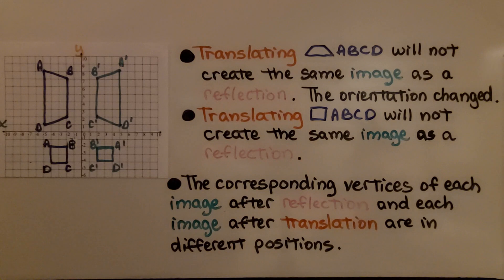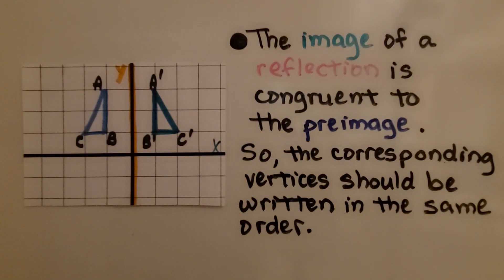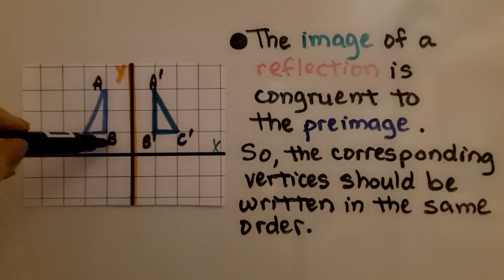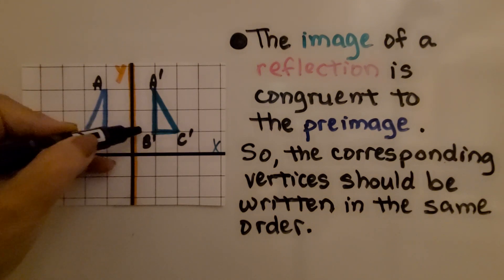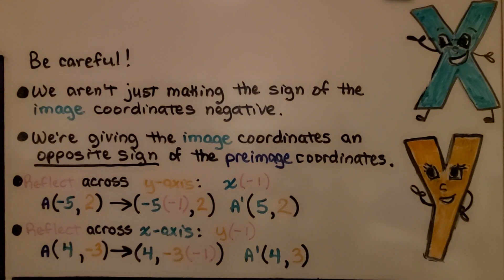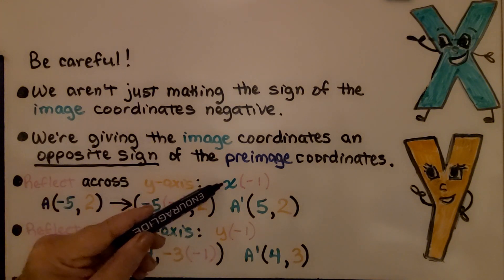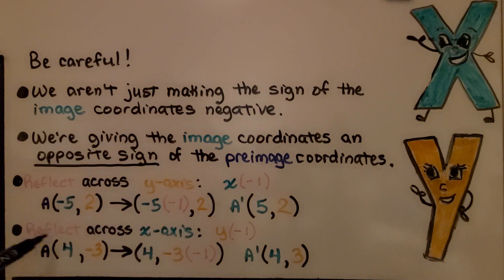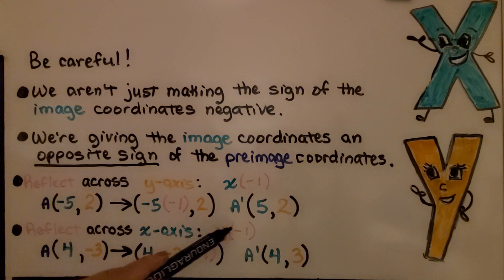The corresponding vertices of each image after reflection and each image after translation are in different positions. The image of a reflection is congruent to the pre-image, so the corresponding vertices should be written in the same order: A, B, C maps to A prime, B prime, C prime. Be careful — we aren't just making the sign of the image coordinates negative; we're giving the image coordinates an opposite sign of the pre-image coordinates. If reflecting across the y-axis, multiply x-values by negative 1; if reflecting across the x-axis, multiply y-values by negative 1.